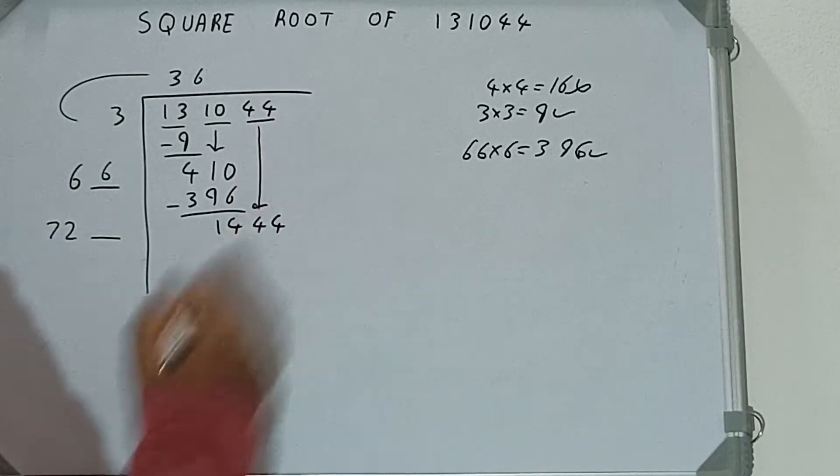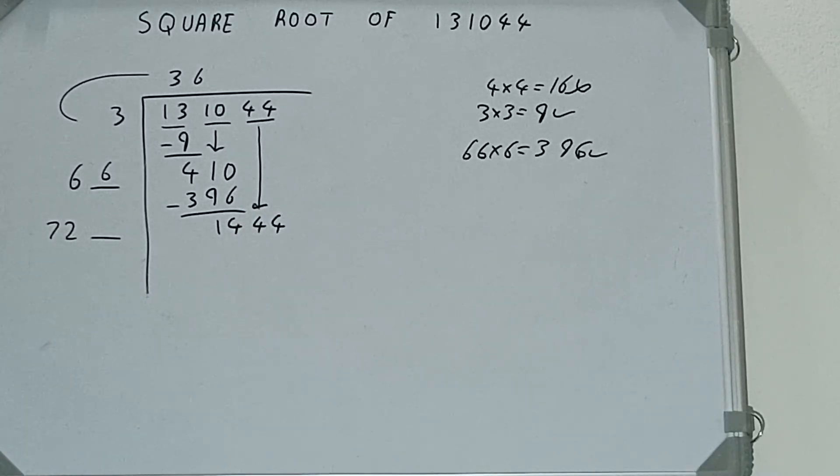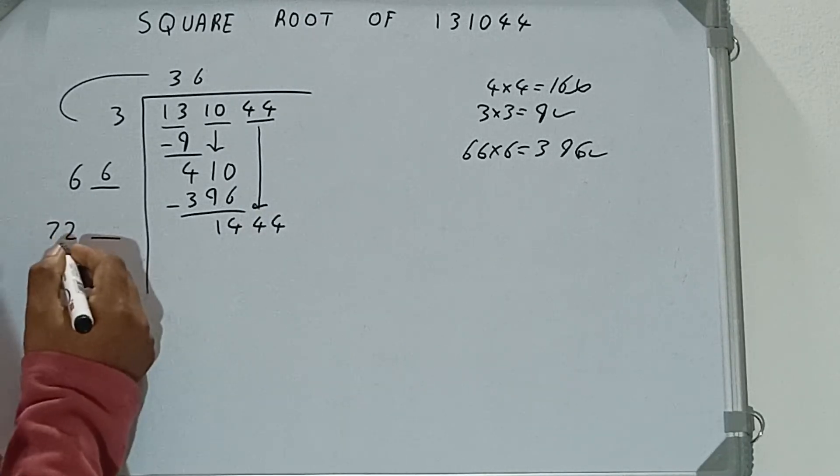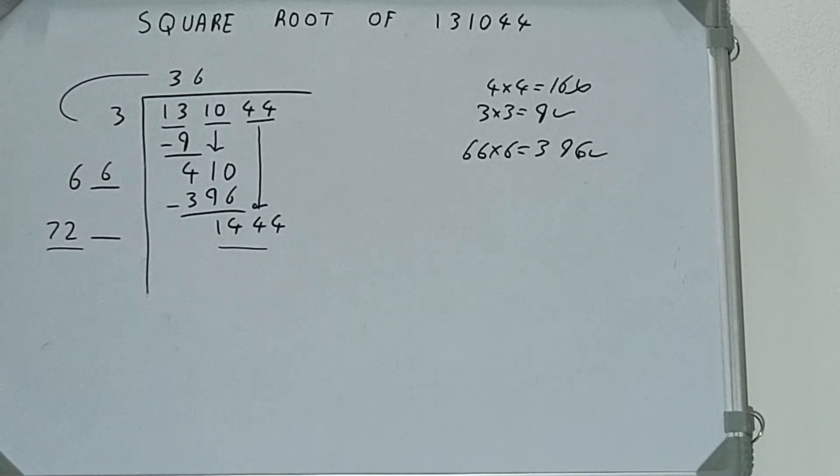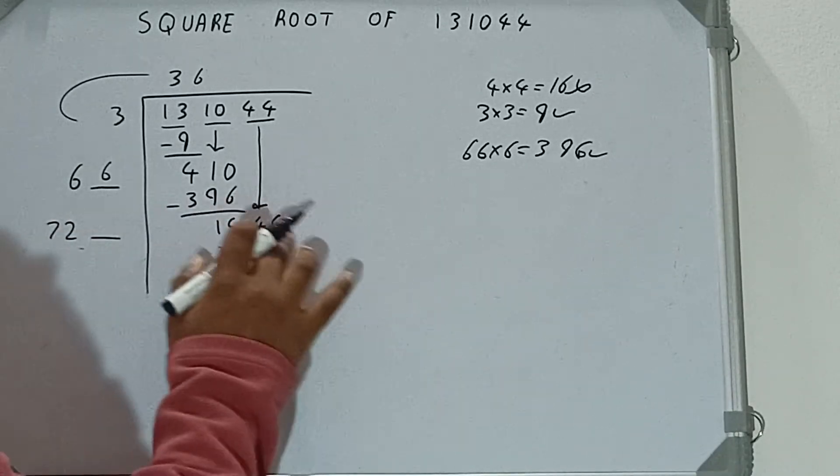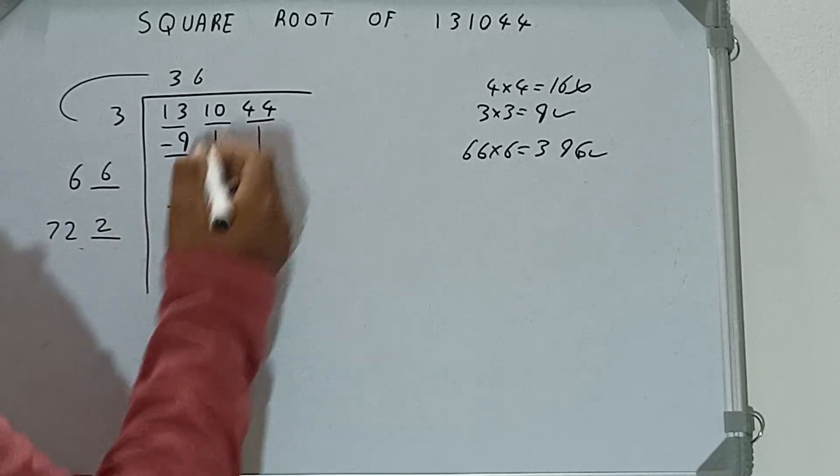Bring the next pair down and it will be 144. Now we can compare this 72 and 144. So 72 two times is 144, so we can clearly try 2 times. So 2 here and 2 here.